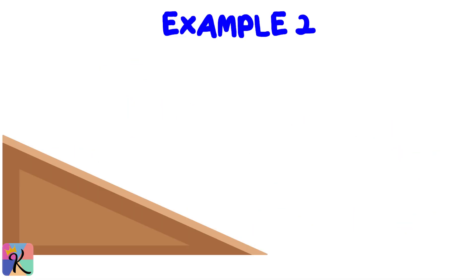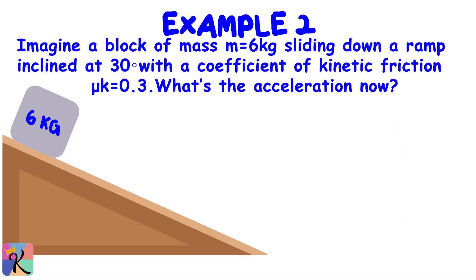Now let's add some friction. Imagine a block of mass M = 6 kilograms sliding down a ramp inclined at 30 degrees with a coefficient of kinetic friction μk = 0.3. What's the acceleration now? First, calculate the force pulling the block down the ramp: Mg sin theta = 6 × 9.8 × sin(30°) = 29.4 newtons.